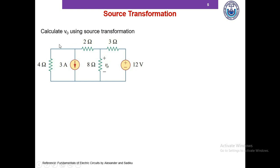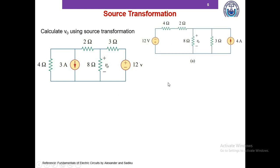Then we will be able to combine that converted resistor and the 2 ohm resistor into one resistor, and potentially reduce the size of the circuit. Taking source transformation of this 3 ampere current source and this 4 ohm resistor, we end up with a 12 volt voltage source and a 4 ohm resistor. I have also transformed this 12 volt voltage source, which is in series with this 3 ohm resistor, into an independent current source of 4 ampere in parallel with the 3 ohm resistor.